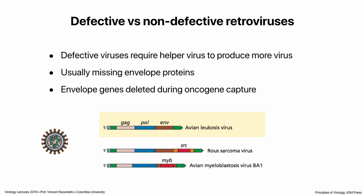Defective viruses require a helper — they're lacking one or more viral genes, typically missing the envelope glycoprotein needed to make an infectious particle. Avian leukosis virus has the complete complement of genes; Rous has an extra cellular gene so it's not defective. But avian myeloblastosis virus has the cellular gene MYB inserted right into the envelope, so the envelope is broken and the virus cannot make a proper particle — it needs a helper virus. Rous would never have figured that out, which is why he was lucky.